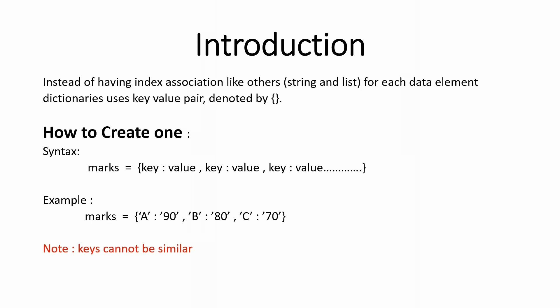Let me explain with a more real-life example. Think of an English dictionary: if you want to search for a meaning, you search for the word. You want the meaning of a specific word, you search for that word in the dictionary. This is exactly how Python dictionaries work. Now let's jump to the next section: how we can create a dictionary.